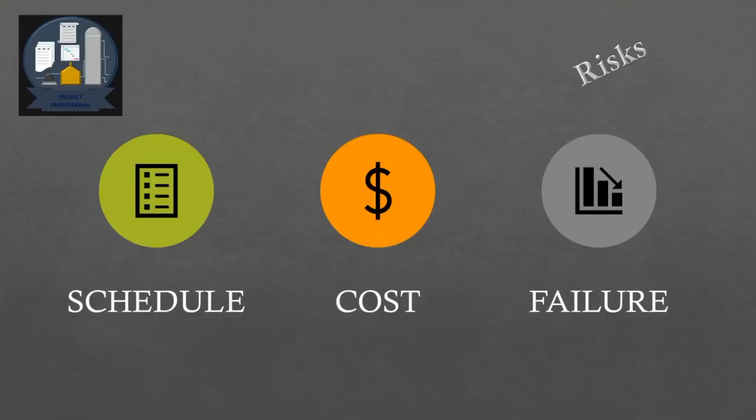The fifth topic is the risks associated with procurement. Though there are various risks, they can be categorized into three: schedule, cost, and failure. Schedule risk refers to any delay in procurement that affects the overall project schedule. Cost risk refers to any expenditure over the estimated cost that impacts the project budget. Failure risk refers to the failure of equipment, components, or machinery.